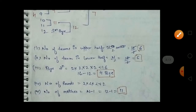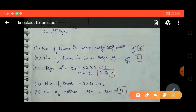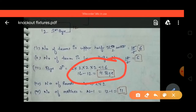The main thing in a knockout fixture is the bye. The formula for bye is 2 to the power of n. We multiply 2 until it is greater than the number of teams. We have 12 teams, so: 2, 4, 8, 16 — 16 is greater than 12. Then 16 minus 12 equals 4, which means we have to give 4 byes.